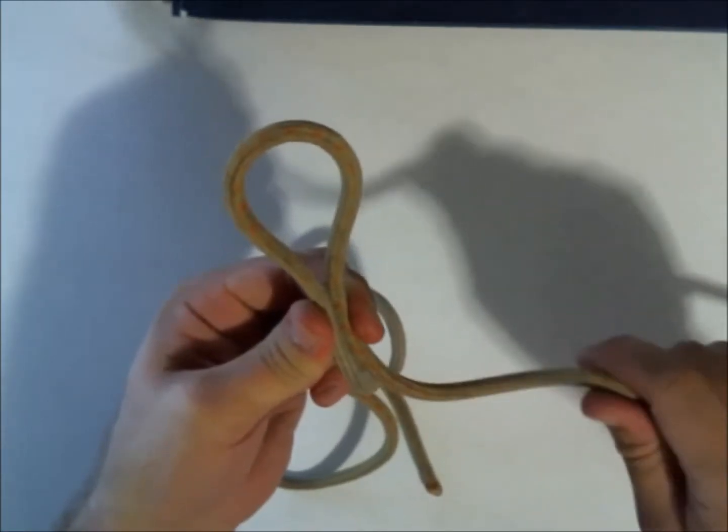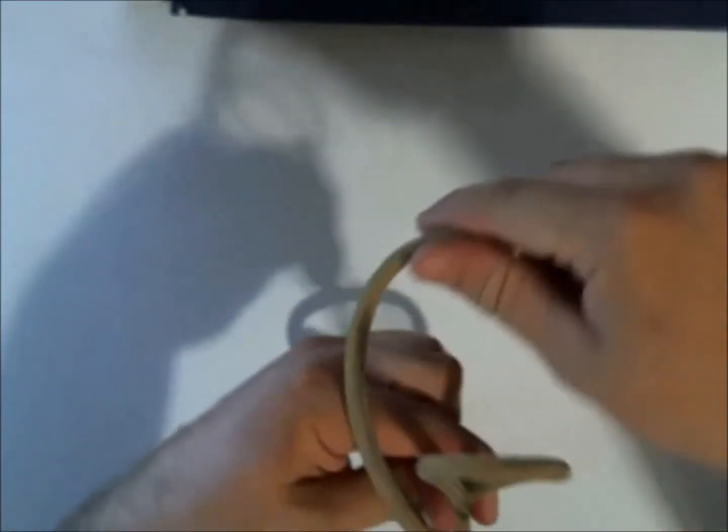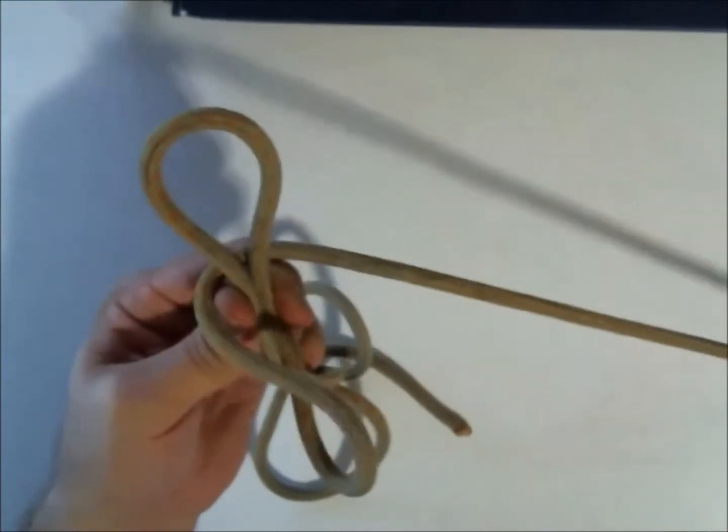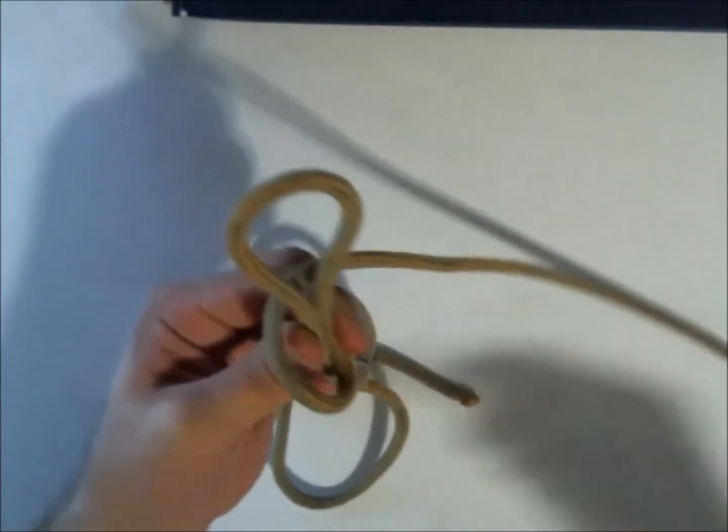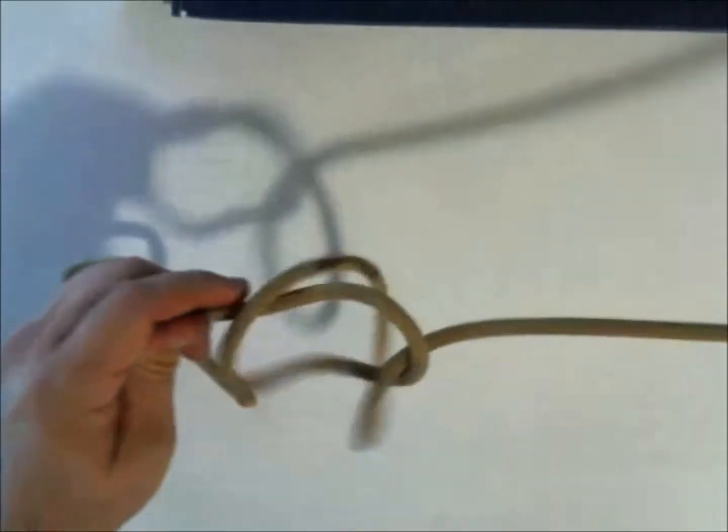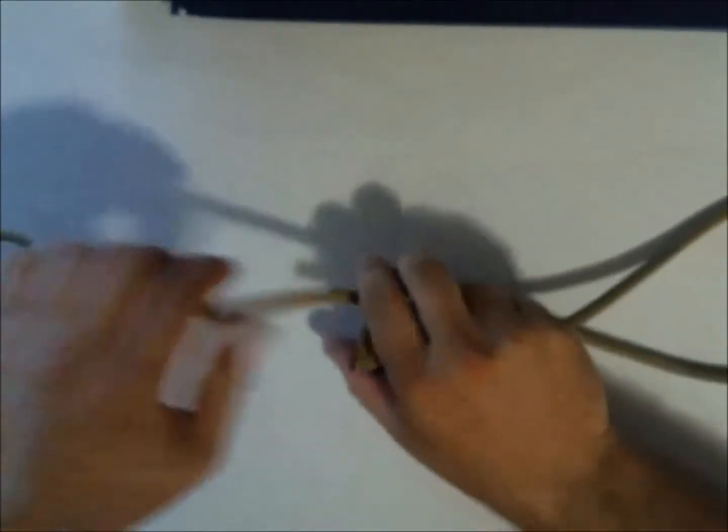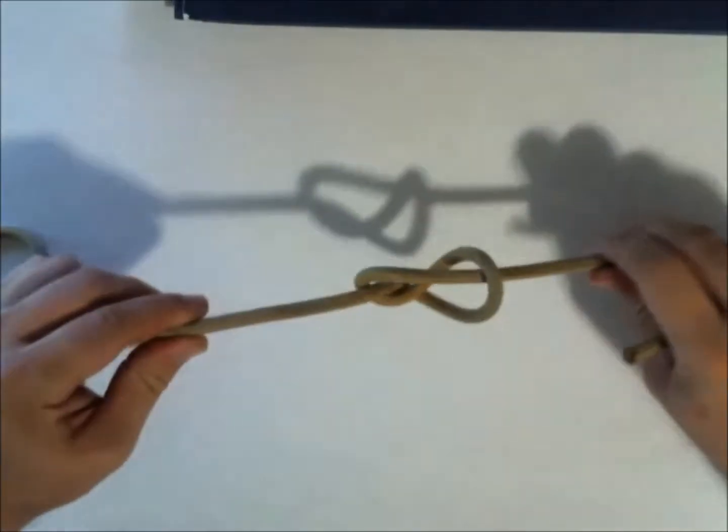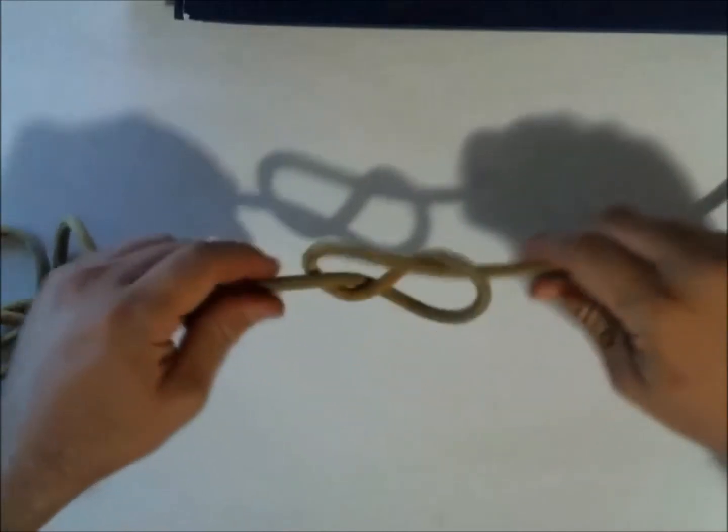I'm going to take my loose end, wrap it around, and then feed it through this loop and pull the knot tight. I'm going to end up with a figure eight knot just like that.